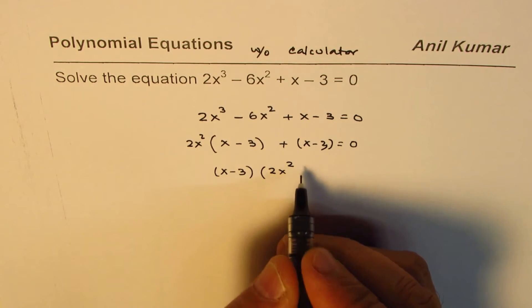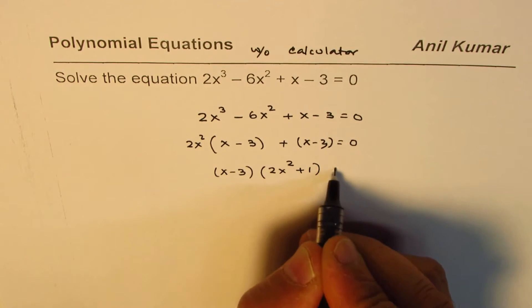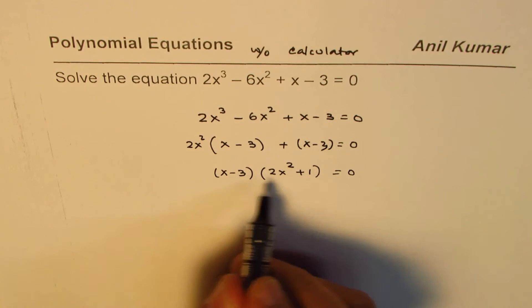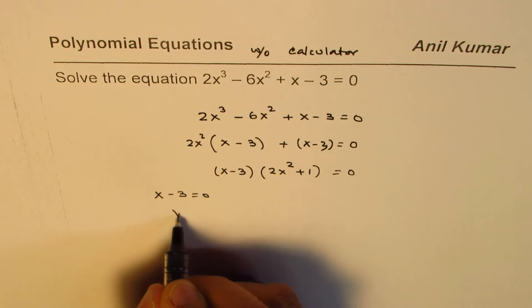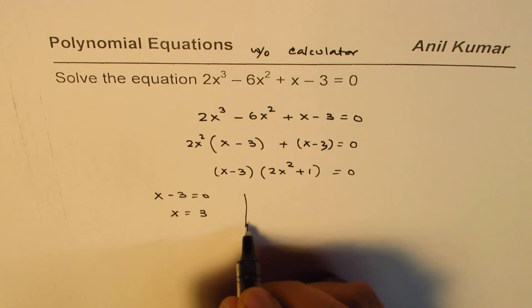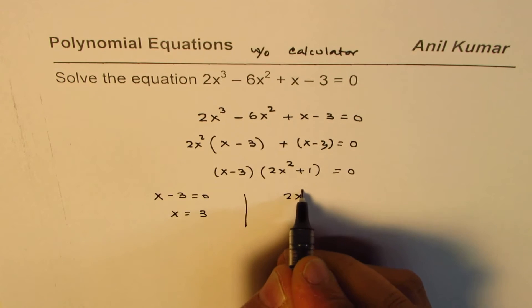Now the solution is these factors could be 0. So first solution is when x - 3 = 0, that gives you x = 3. And the other solution will be when you have 2x² + 1 = 0.